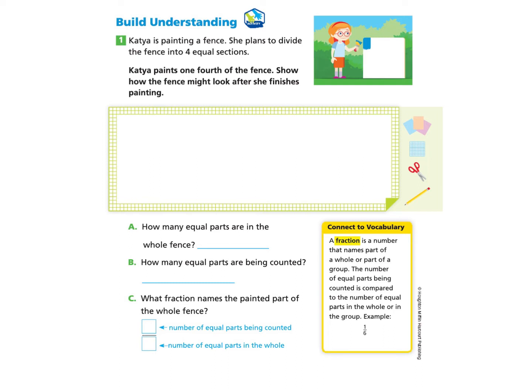Katya is painting a fence. She plans to divide the fence into four equal sections. Katya paints one fourth of the fence. Show how the fence might look after she finishes painting. If you would like to pause and try this part on your own you may do so, or you may follow along with me.